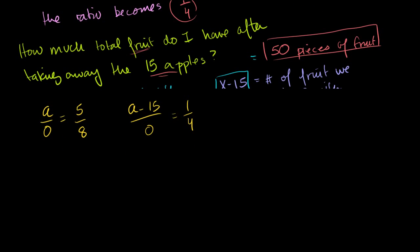So let's see if we can solve this. If we cross multiply both sides of this equation, we get 8A is equal to 5O. That's not a 0, it's equal to 5O. Or if we subtract 5O from both sides, we get 8A minus 5O is equal to 0. So this is just a linear equation with two unknowns.